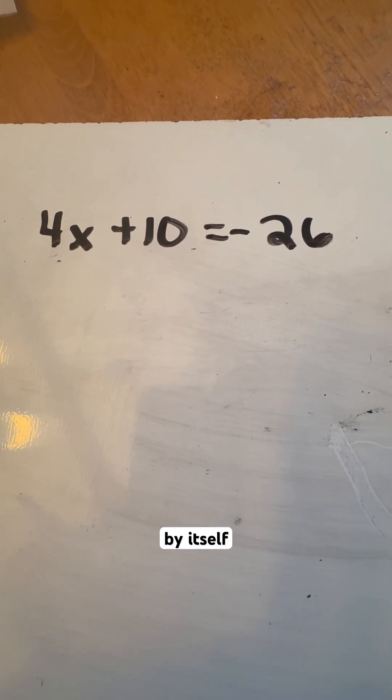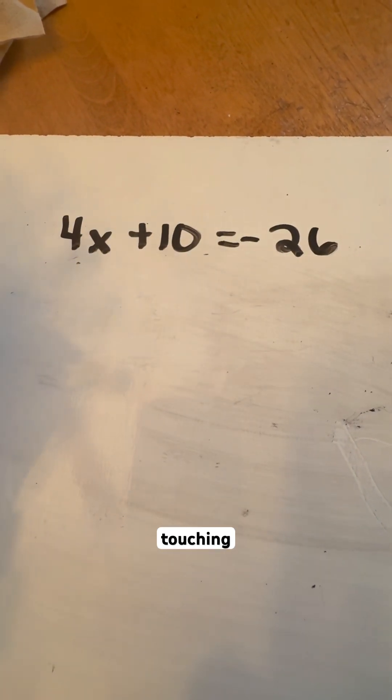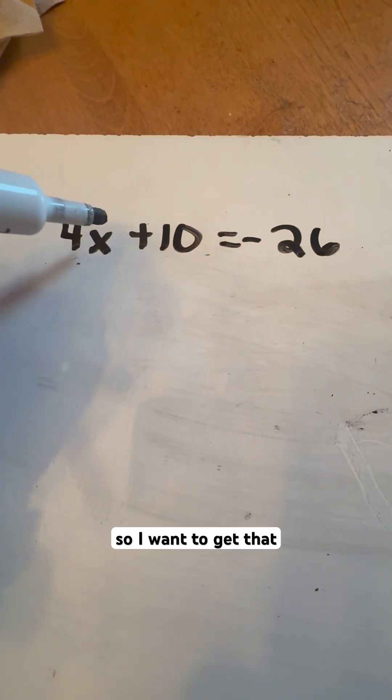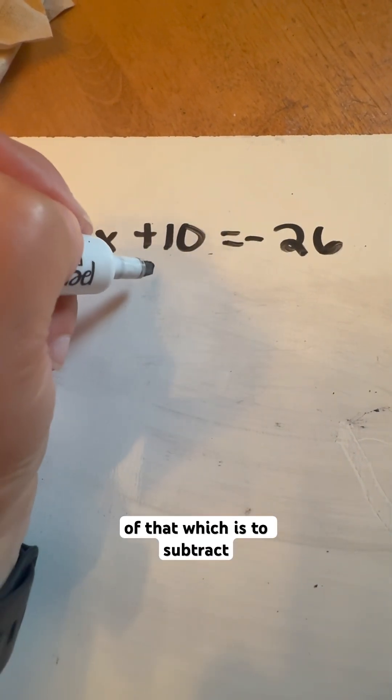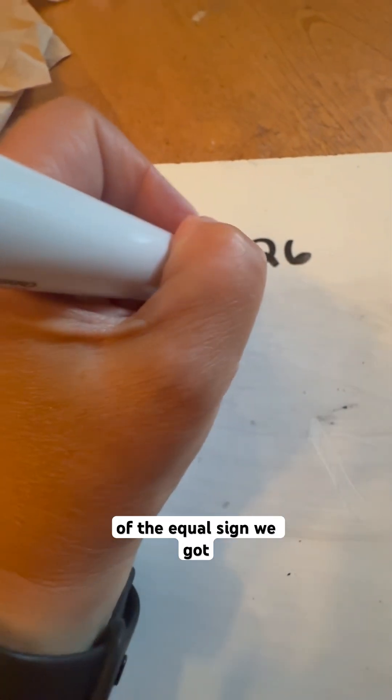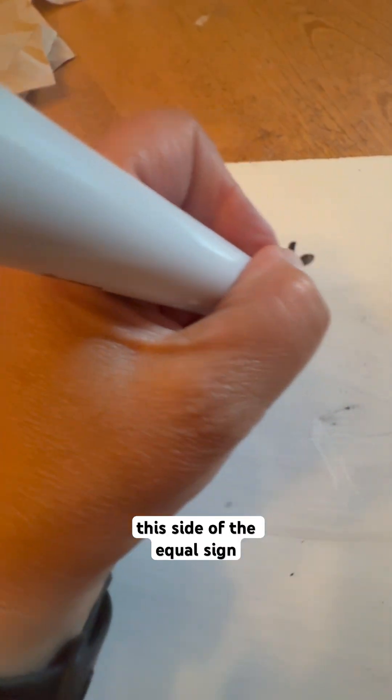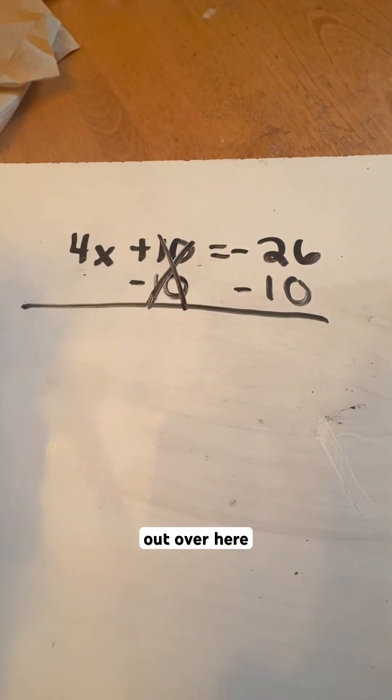get the x by itself, which means the only thing I need to do is start with that number that's not touching the x. So I want to get that plus 10 out of there, which is the inverse is what I have to do. So I have to do the opposite of that, which is to subtract 10. And we do it on that side of the equal sign, we got to do it over here on this side of the equal sign. Now what's going to happen is these 10s are going to cancel out over here, as they should.